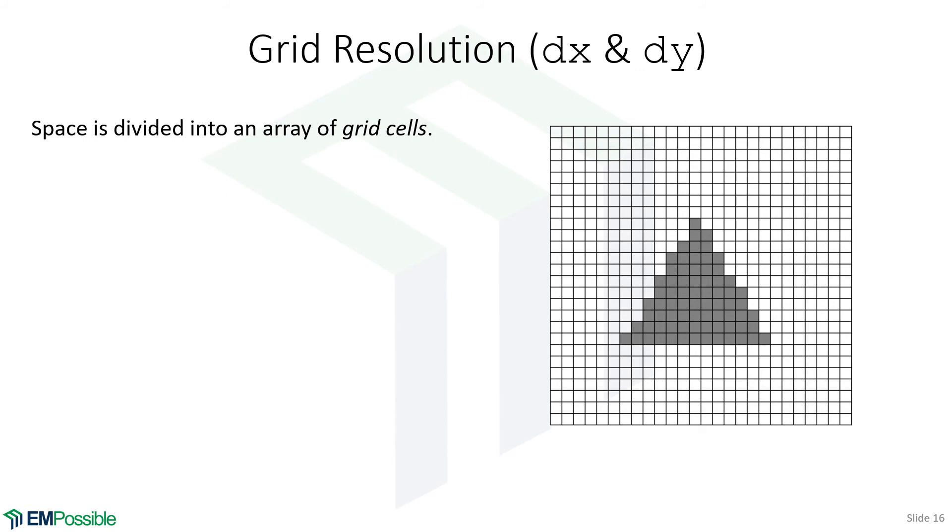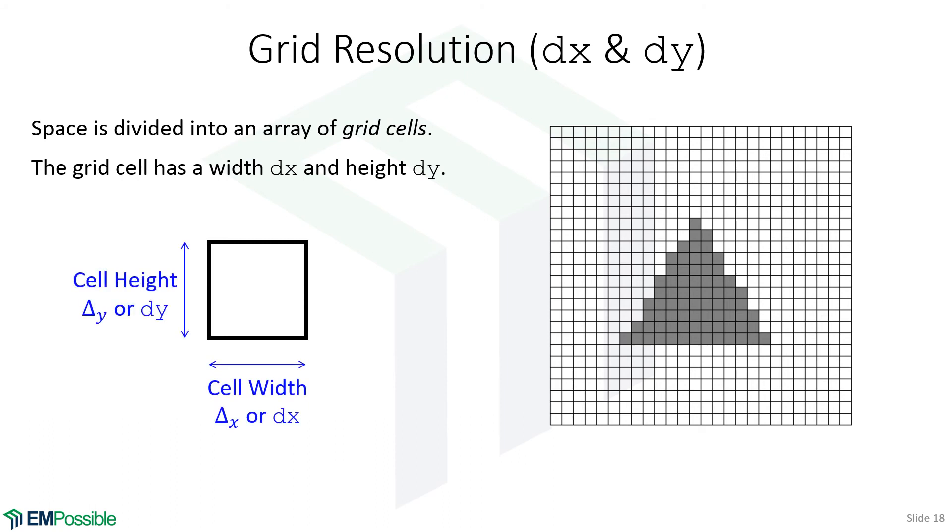Our grid resolution. We take our physical space and divide it into a series of discrete cells we're calling grid cells. That cell has some width and some height. In MATLAB, we will call the width of this DX and the height DY. If we're working on paper and equations, we might have a delta X and a delta Y. We call those the grid resolution parameters. It's the size of the grid cell.